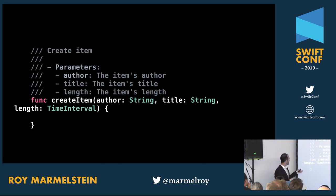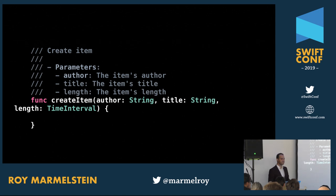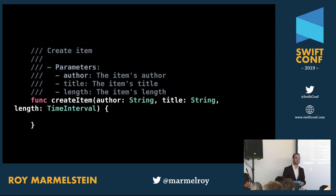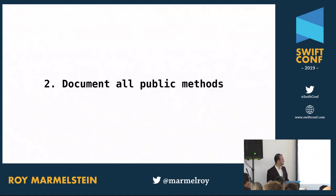One thing I've seen a lot in codebases is something like this: imagine a function that creates an item and takes an author string, a title string, and a length. A common way of documenting this is to say the function creates an item, the author is the item's author, the title is the item's title, and the length is the item's length. Is this documentation actually useful? Does it help us understand why this function was written in a specific way?